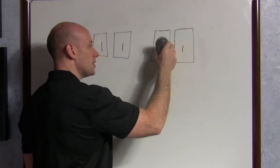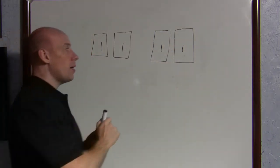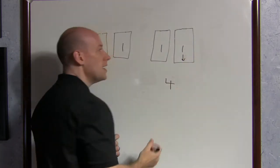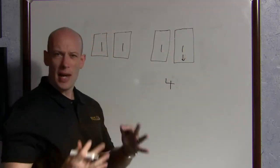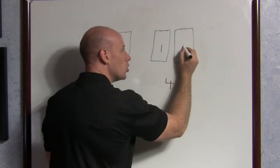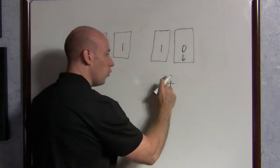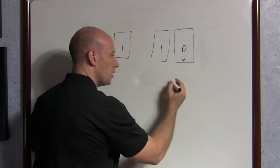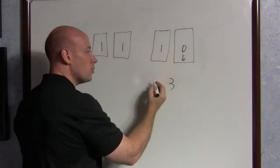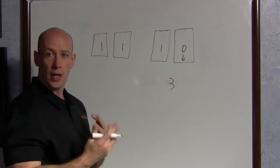What Dynamic Quorum says is in a planned scenario, so I'm going to shut this box down for maintenance. And there were four votes. As I shut this box down, as I put it into maintenance mode, as I do a clean shut down, I'm patching it, whatever, it actually loses its vote. So now there aren't four votes, there's three votes. So there's three votes out of three remain. It's dynamically changing the Quorum of the cluster.